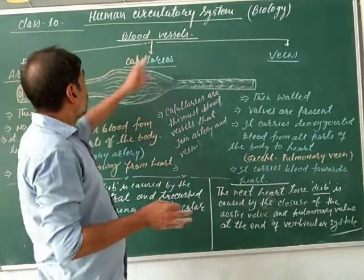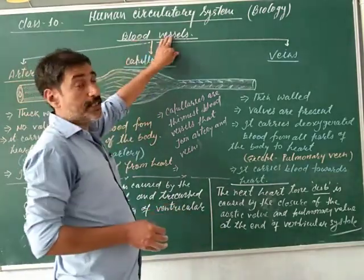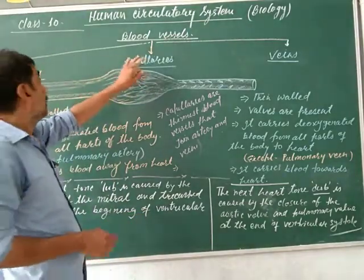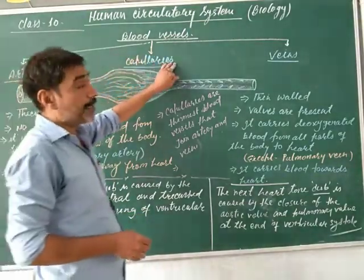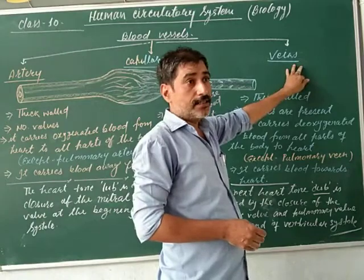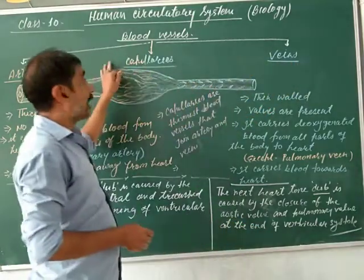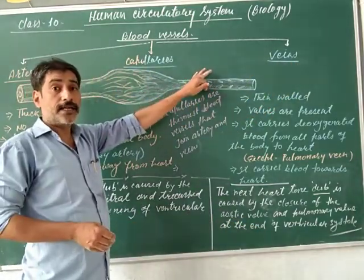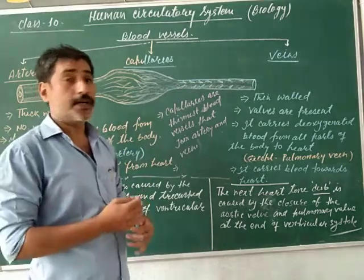First, this is about the blood vessels. There are three types of blood vessels: artery, capillary, and veins. These three types of blood vessels carry blood throughout our body parts.